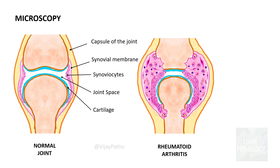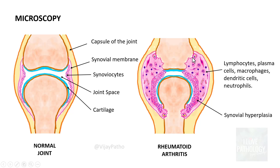Microscopically, the most important finding in rheumatoid arthritis is hyperplasia of the synovial lining — synovial hyperplasia. Normally it's just a single lining, but now you see multi-layering of the synovial epithelium. You also see lots of inflammatory cells along with fibroblasts, lymphocytes, plasma cells, macrophages, dendritic cells and neutrophils, because there is T and B cell activation leading to accumulation of all these inflammatory cells.